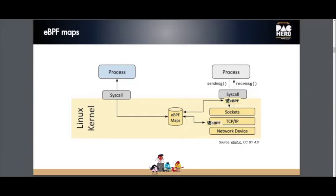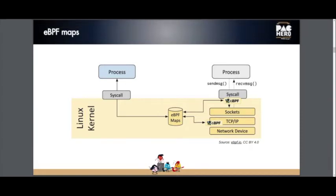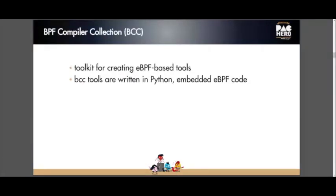Writing manual eBPF tools was quite challenging, so the BPF Compiler Collection — BCC — was created as a toolkit for building eBPF-based tools. It handles compiling the eBPF C-like code to bytecode, loading the bytecode into the kernel via the syscall, managing eBPF maps, and provides helper functions you can use in your C code. BCC tools are written in Python and use the LLVM compiler to compile the C-like code to eBPF bytecode.